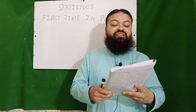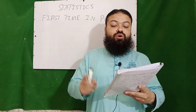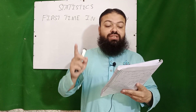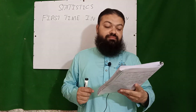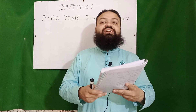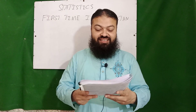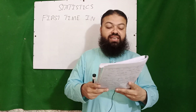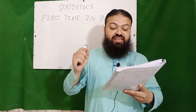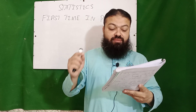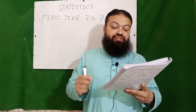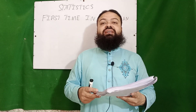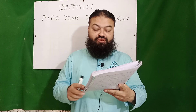Question number seven: the word 'statistics' was first used by German scholar Gottfried Achenwall around the middle of the 18th century. Question number eight: probability was first introduced by Blaise Pascal and Pierre de Fermat in the 17th century.